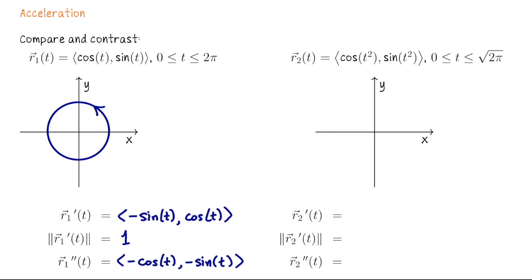If we sketch that acceleration vector at a point on the circle, it goes from that point back toward the origin. In this parametrization, the velocity vector is actually the unit tangent vector, and the acceleration vector is actually the unit normal vector.